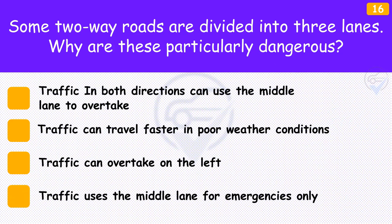Some two-way roads are divided into three lanes. Why are these particularly dangerous? The answer is 'Traffic in both directions can use the middle lane to overtake'. If you intend to overtake, you must consider that approaching traffic could be planning the same manoeuvre. When you've considered the situation and decided it's safe, indicate your intentions early. This will show the approaching traffic that you intend to pull out.